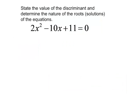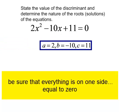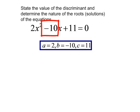State the value of the discriminant and determine the nature of the roots. I have the quadratic equation, 2x squared minus 10x plus 11 equals zero. Everything is on one side. I need to find a, b, and c. a is the coefficient of my squared term, b is the coefficient of my x to the first term, and c is the constant.